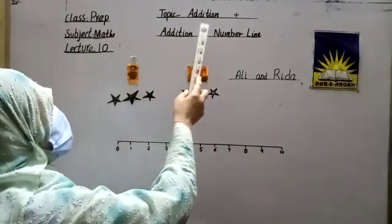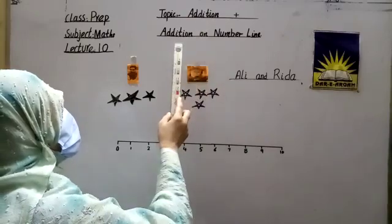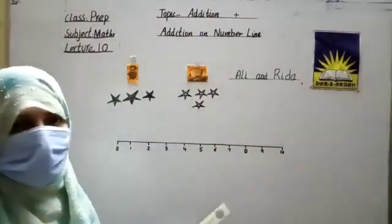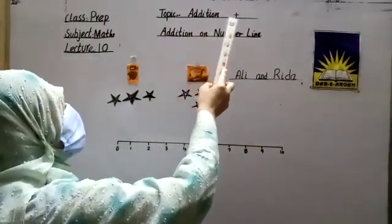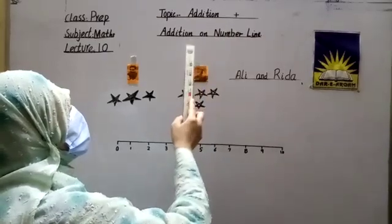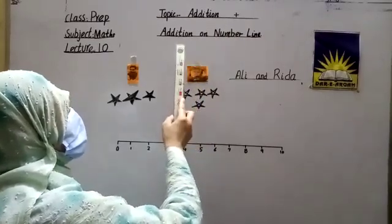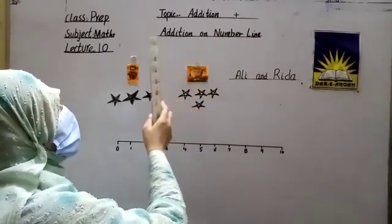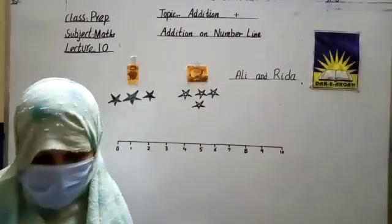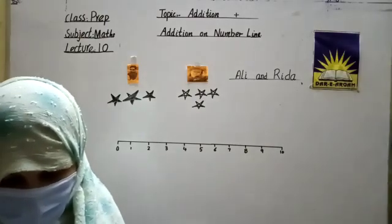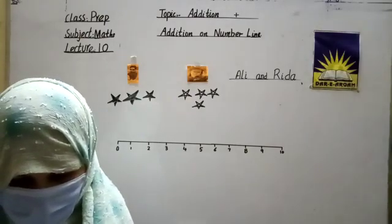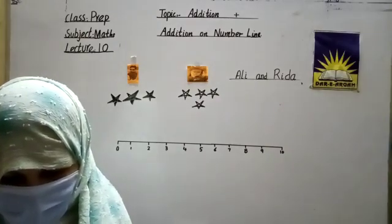The topic is Addition — Addition on the number line. As you know very well, students, the sign of addition is plus. When we use the number line in addition, we move from left to right. Whenever we do addition, it doesn't matter whether we start from a bigger or smaller number — the answer remains the same.